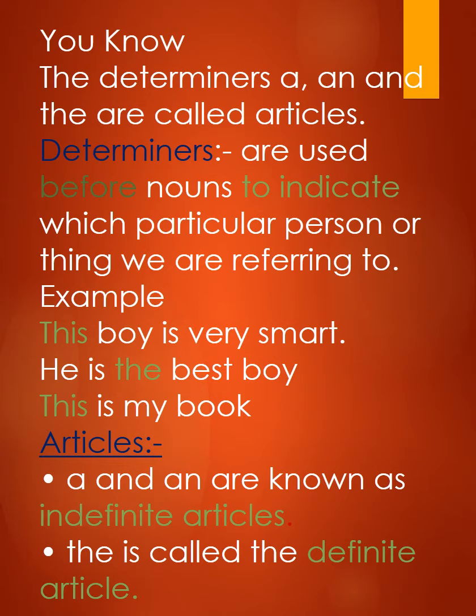Uske baad aata hai Demonstratives — those used to demonstrate or indicate something. Jaise: this, that, these, those. For example, 'This boy is very smart' — yahan 'this' noun se pahle aa raha hai, toh ye Determiner ho jayega. Usi tarah se Possessives bhi Determiners hote hain — my, your, his, etc. For example, 'This is my book' — yahan 'my' noun 'book' se pahle aa raha hai, toh ye Possessive Determiner hai.